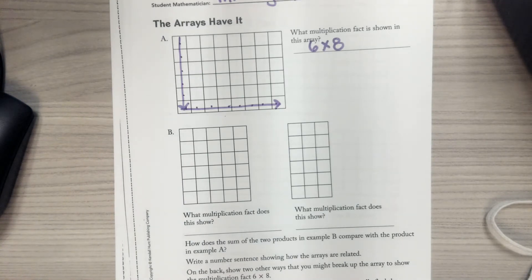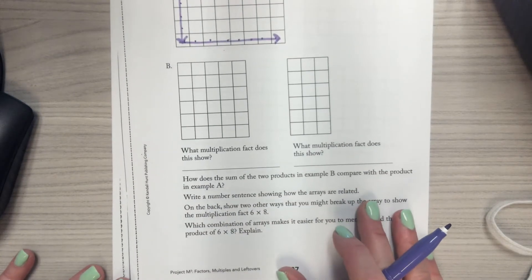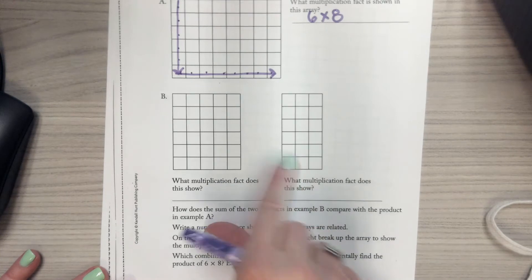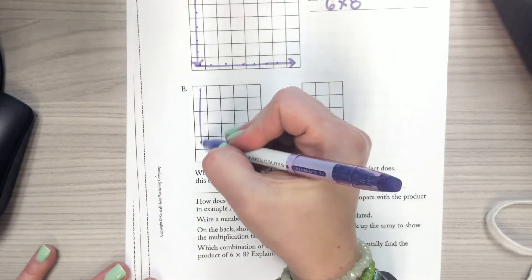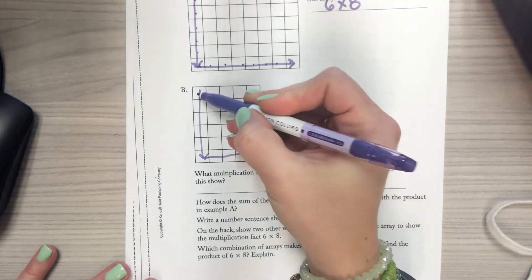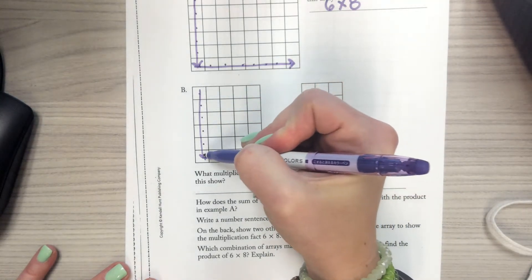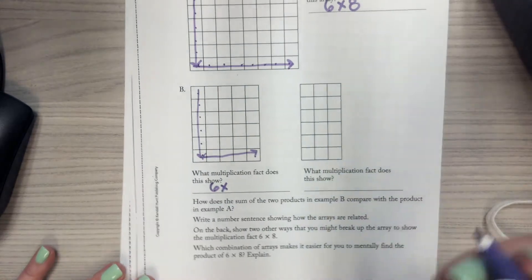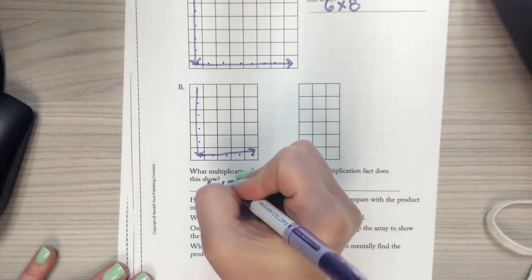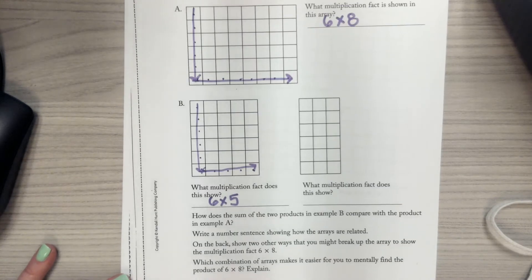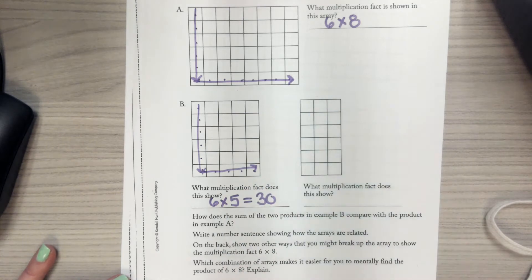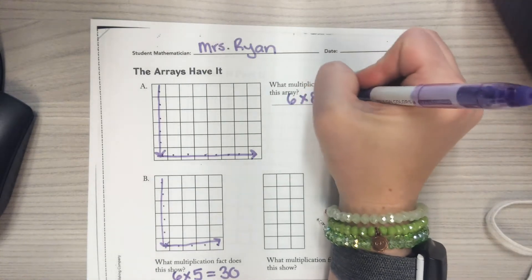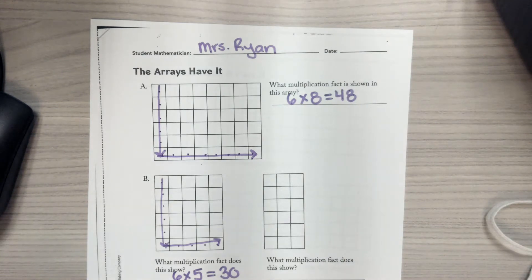Now let's go ahead and look at B. Here at B, we have two arrays. We have two separate arrays. What multiplication fact does this show? Again, remember you have to dive before you swim. So one, two, three, four, five, six. One, two, three, four, five. You know what we should do? We should answer these. So six times five is 30 and six times eight is 48. I should have done that. I apologize.